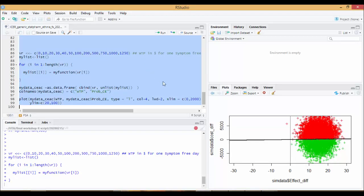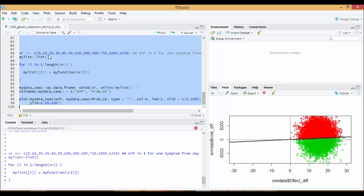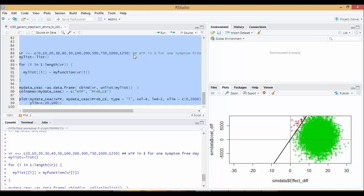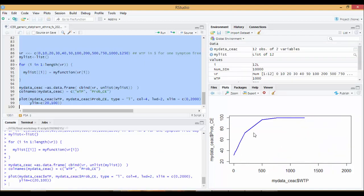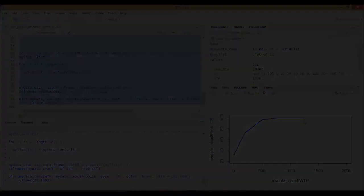What we see here is 10,000 simulations for each willingness to pay that we put here. And after these simulations, cost-effectiveness acceptability curve will be plotted as we see here. Good luck and thank you.